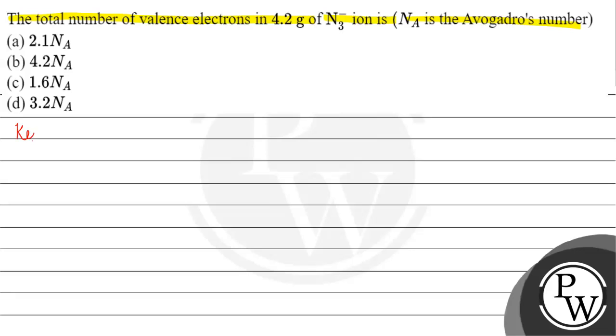The key concept for this question is number of moles is basically equals to mass by molar mass and it is also equals to number of elementary entities by Avogadro's number.